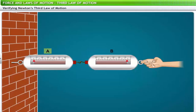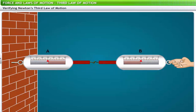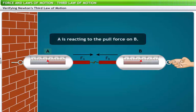Consider a demonstration with two spring balances A and B — one end of A is fixed to a wall, with the other end hooked to spring balance B. When a force is applied on spring balance B, it also stretches spring balance A. Both springs show equal expansion, indicating equal magnitude of force. The direction of expansion of spring A is opposite to that of B. As you pull B, A reacts — the force due to B is exerted on A, while the force due to A is exerted on B.